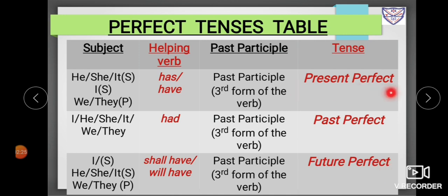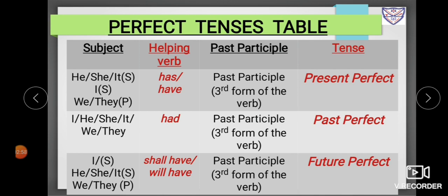In summary: for present perfect tense, add 'has' or 'have' before the past participle or third form of the verb. For past perfect tense, add 'had' before the past participle or third form of the verb. For future perfect tense, add 'shall have' or 'will have' before the past participle form of the verb. Based on these helping verbs and past participle forms, you will know whether the verb is in present perfect, past perfect, or future perfect tense.